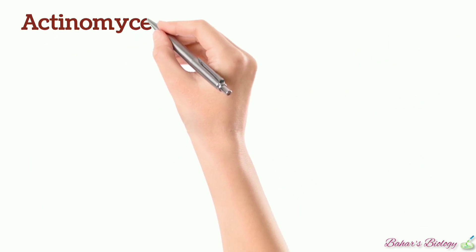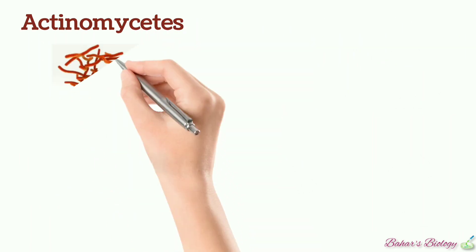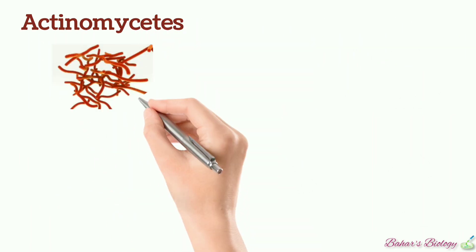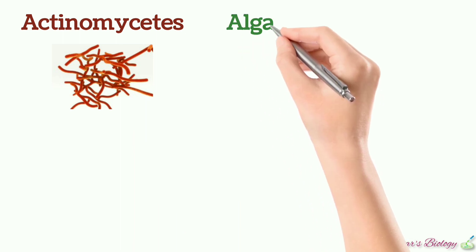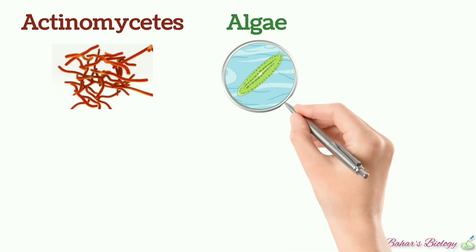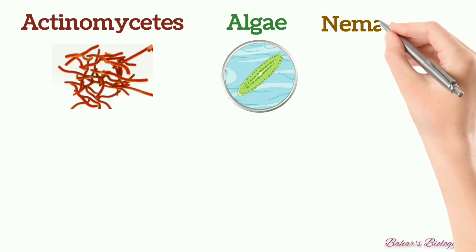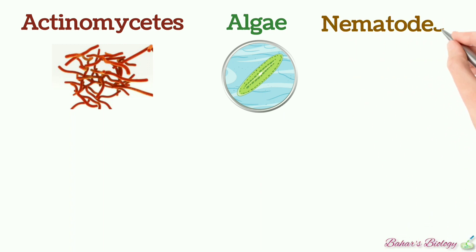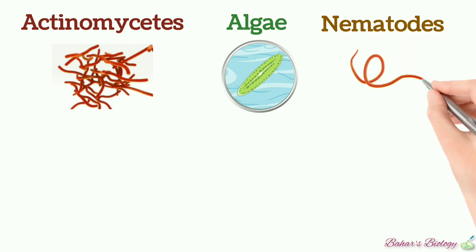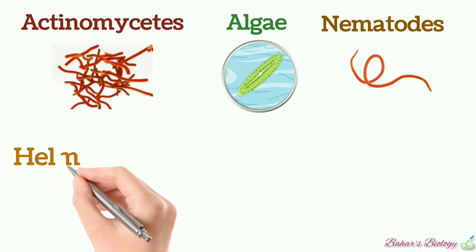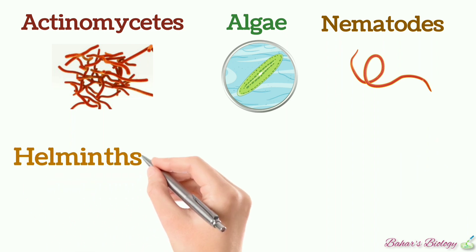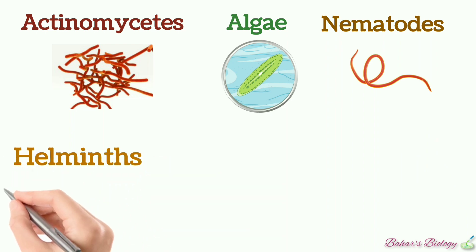Next is actinomycetes, which are an intermediate type between bacteria and fungi. Another type is algae — basically algae are aquatic, photosynthetic, and nucleus-bearing organisms. Tiny thread-like organisms are included in nematodes.